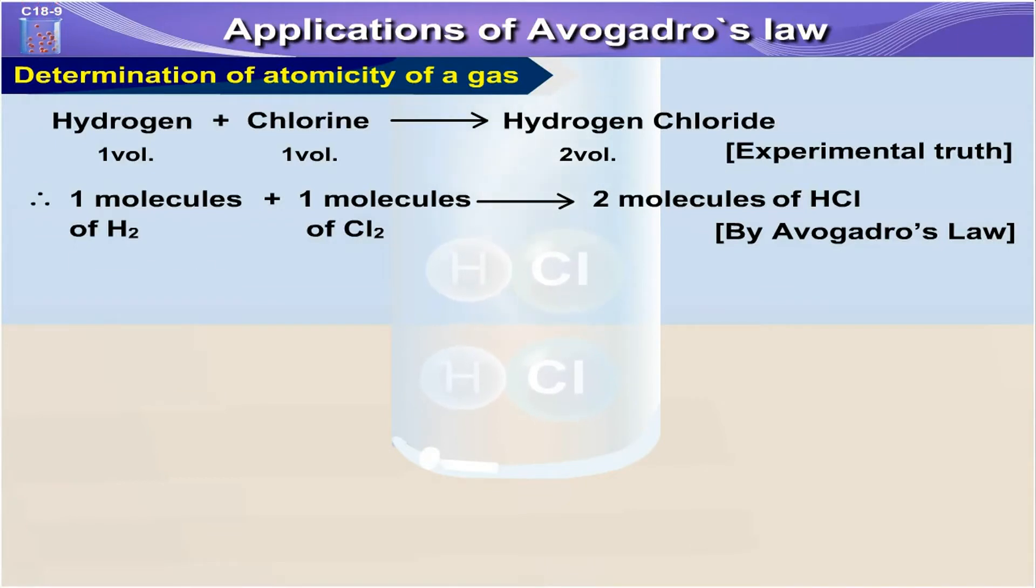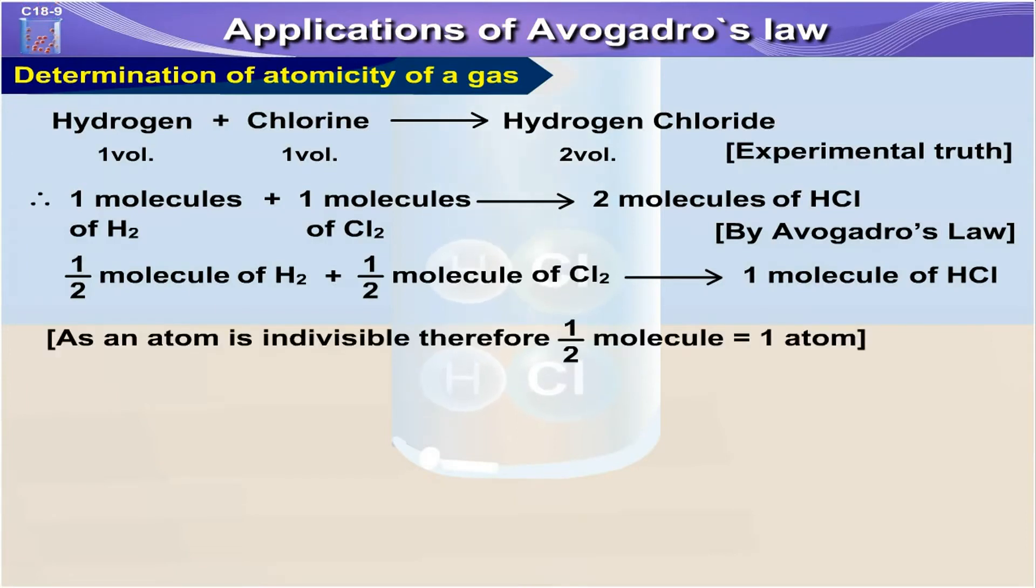Further, half molecule of hydrogen plus half molecule of chlorine gives one molecule of hydrogen chloride. As an atom is an individual, therefore half molecule is equal to one atom.